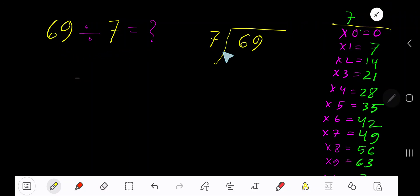69 divided by 7. Here 7 is a divisor, so we need the multiplication table of 7: 7 times 0 is 0, 7 times 1 is 7, 7 times 2 is 14, 7 times 3 is 21, 7 times 4 is 28. To find the multiplication table of 7, just add 7 with the previous result: 0 plus 7 is 7, 7 plus 7 is 14, 14 plus 7 is 21.